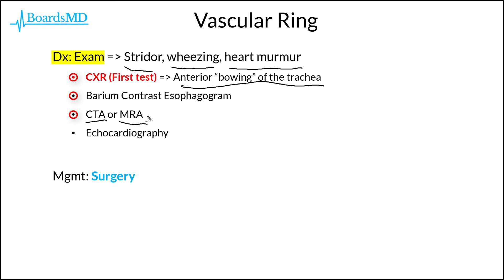Additionally, given the fact that these patients may have a heart murmur as well as the potential for cardiac and aortic anomalies, we should also get an echocardiogram. And ultimately, because this is a structural issue, we are going to manage these patients with surgery.